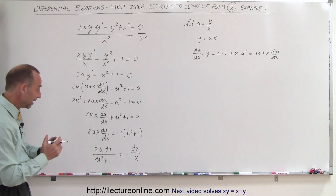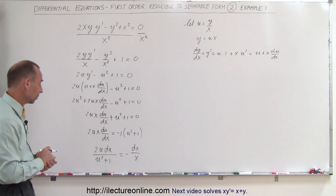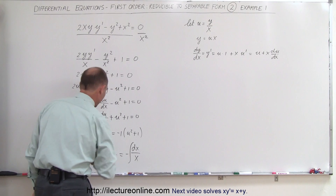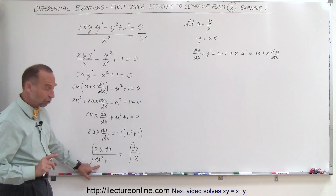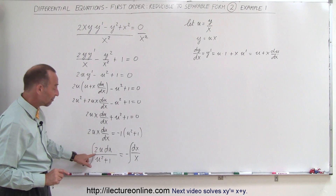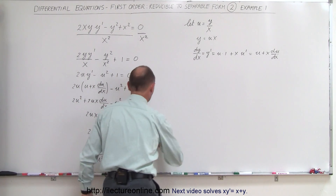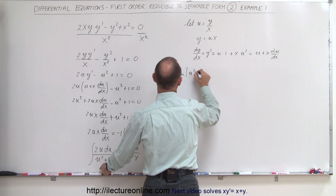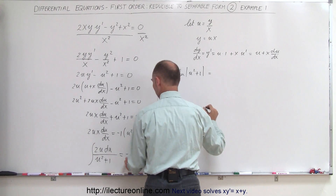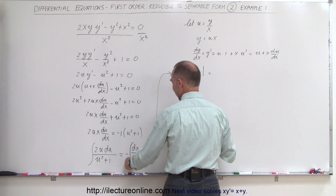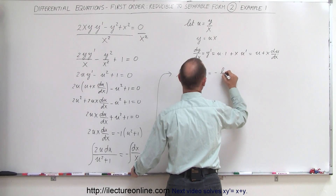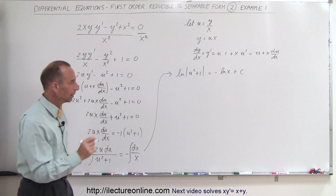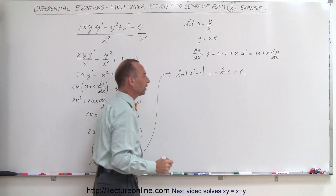We've now successfully separated the u and x variables and we're able to integrate both sides. Notice that the differential of the denominator u squared plus 1 would be 2u·du — we have 2u·du — so we can integrate that directly. The left side becomes the natural log of (u squared plus 1), and the right side becomes the natural log of x plus a constant of integration, c₁, with the minus sign.